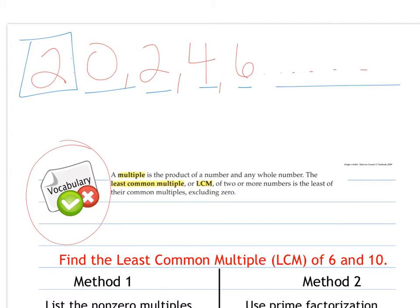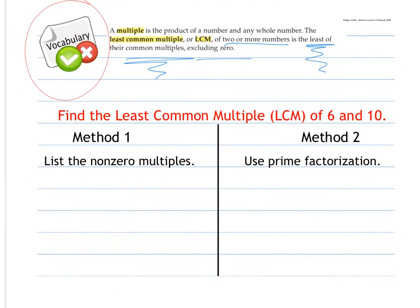The least common multiple is when you're looking at two or more numbers, and you're looking for the least, the smallest number that they share in their multiples, not including 0. Because all numbers are going to have a multiple of 0, since when you multiply any number by 0, you get 0. So we are not including 0 here. If we were asked to find the least common multiple of 6 and 10, there are two methods that we can use. The first is to list the non-zero multiples.